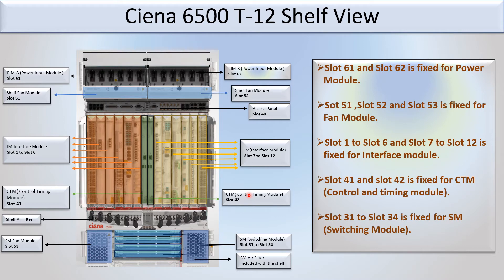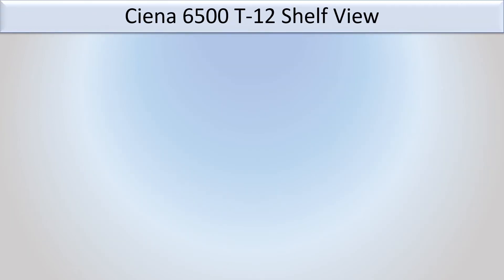Slot 31 to slot 34 is fixed for the switching module. You can see in the picture: slot 31, 32, 33, and 34 — these four slots are fixed for the switching module.